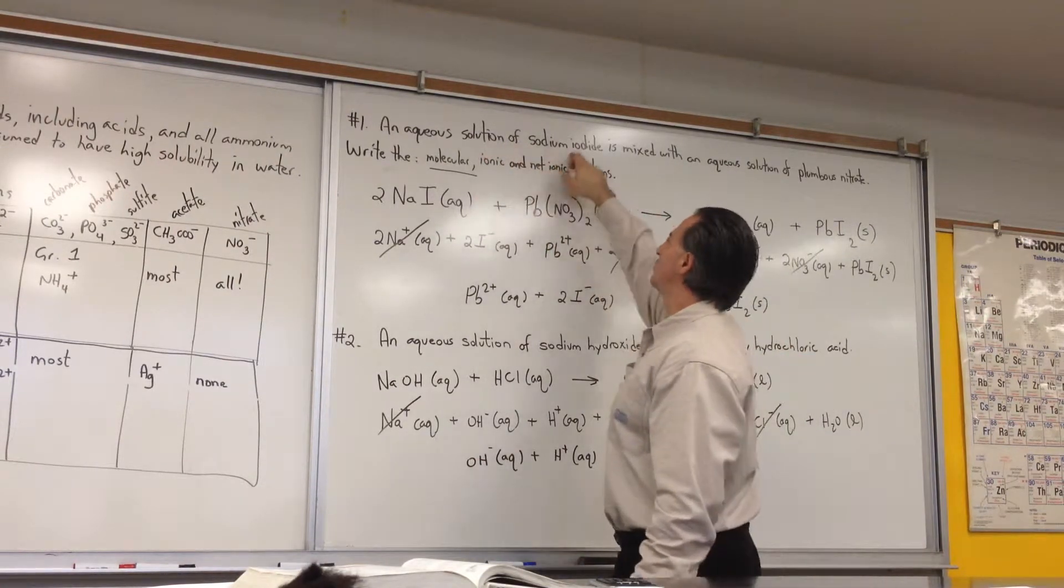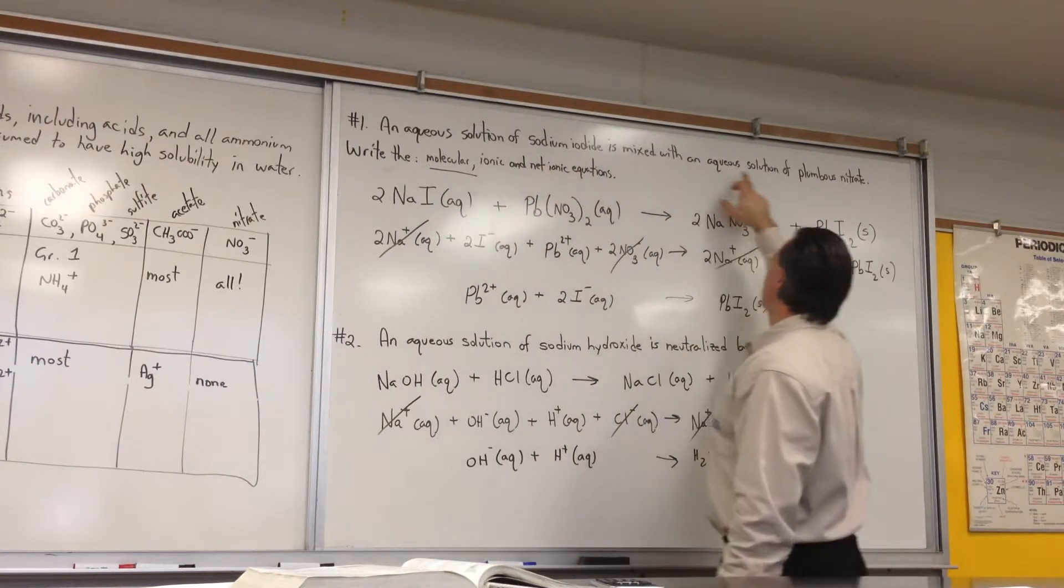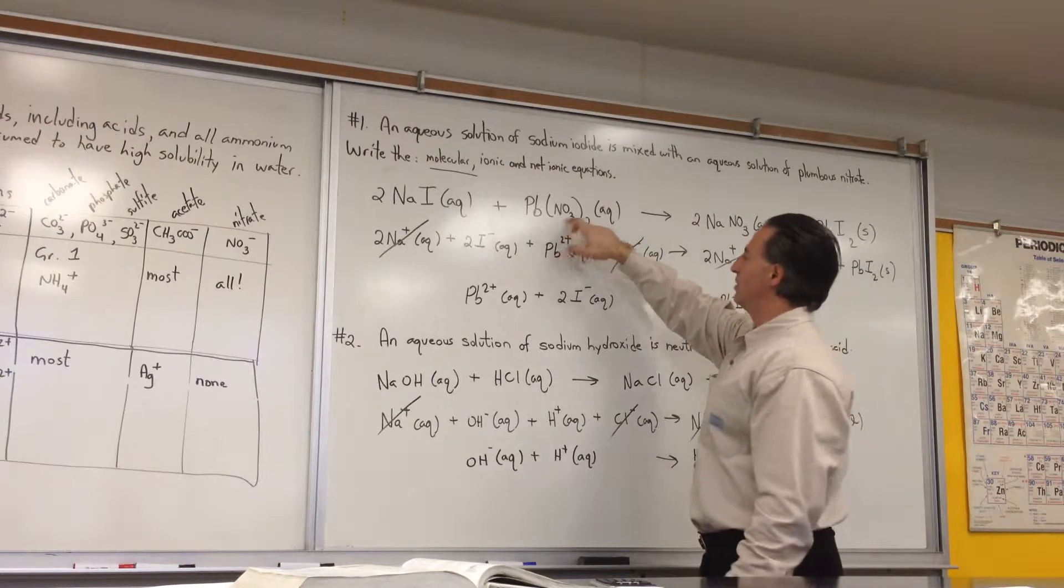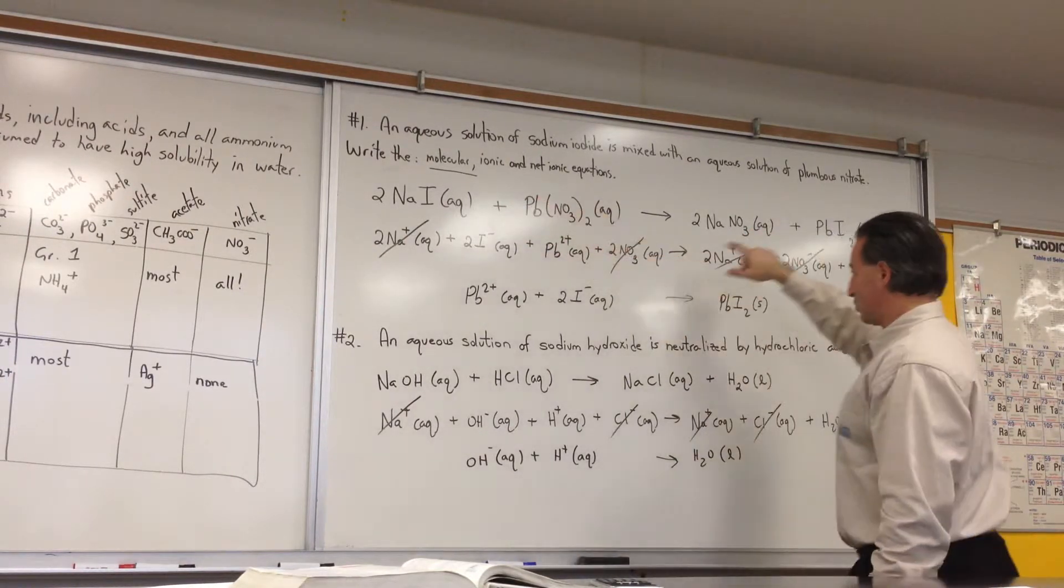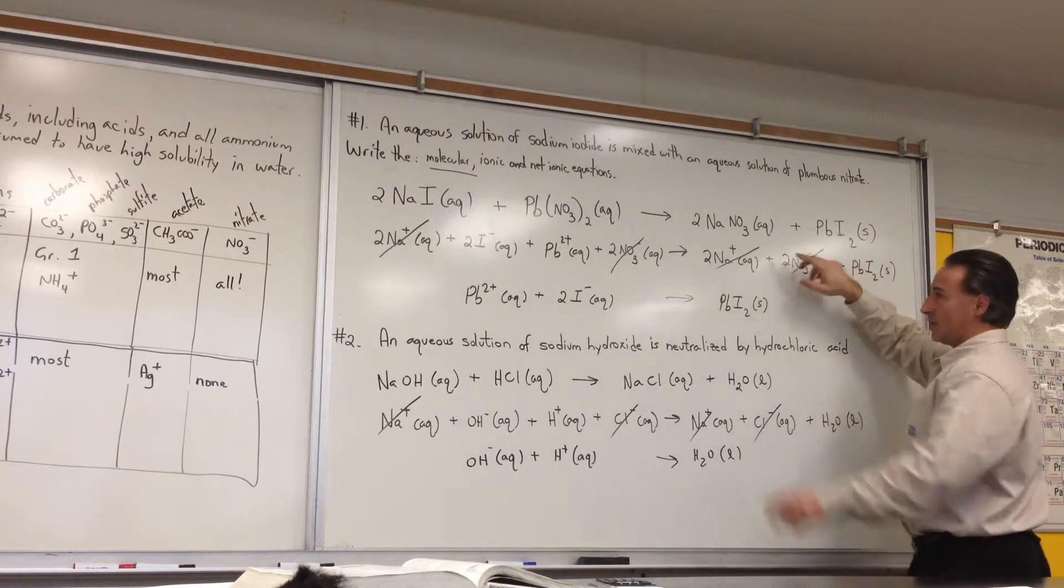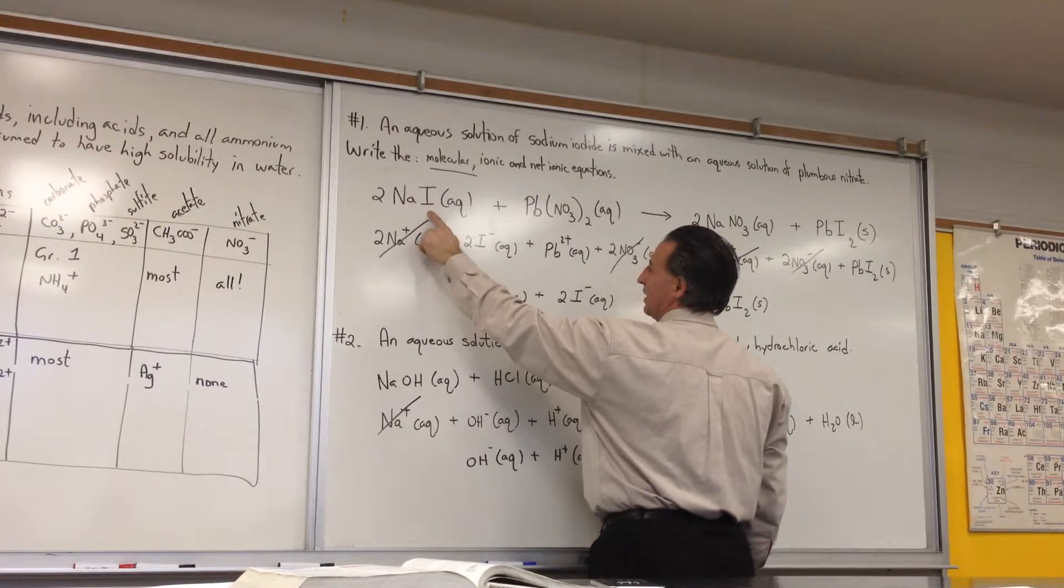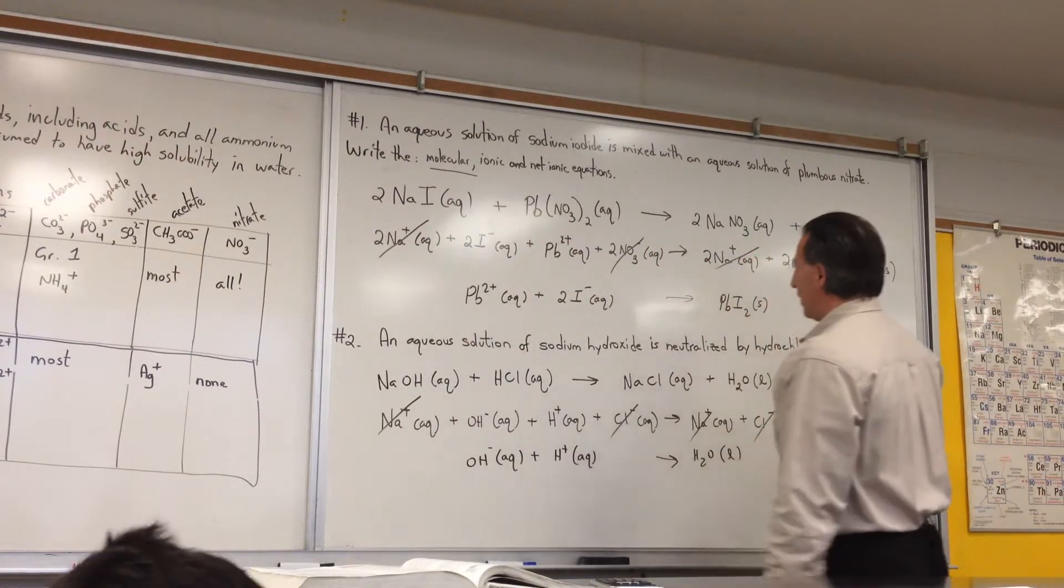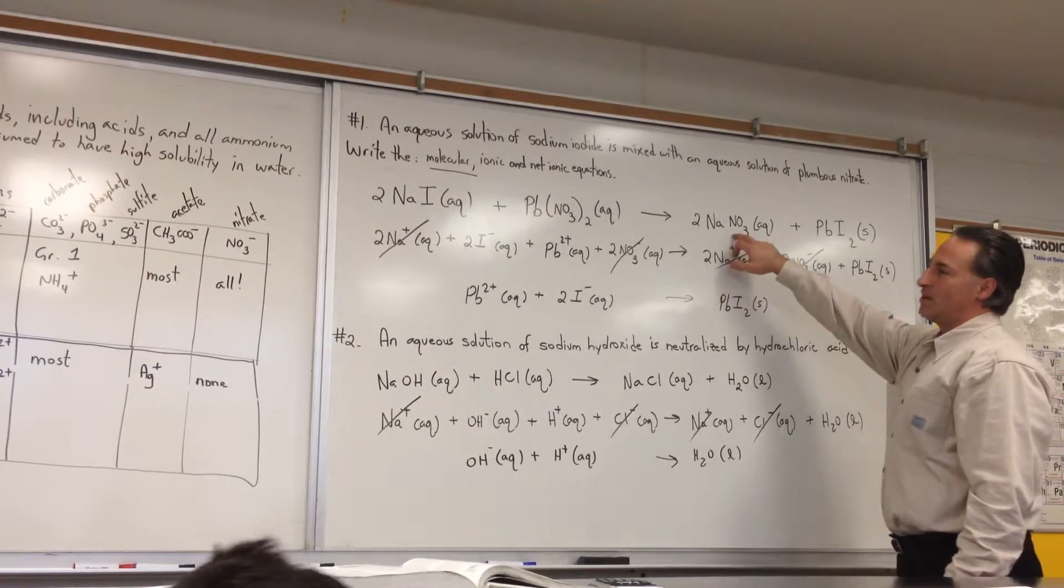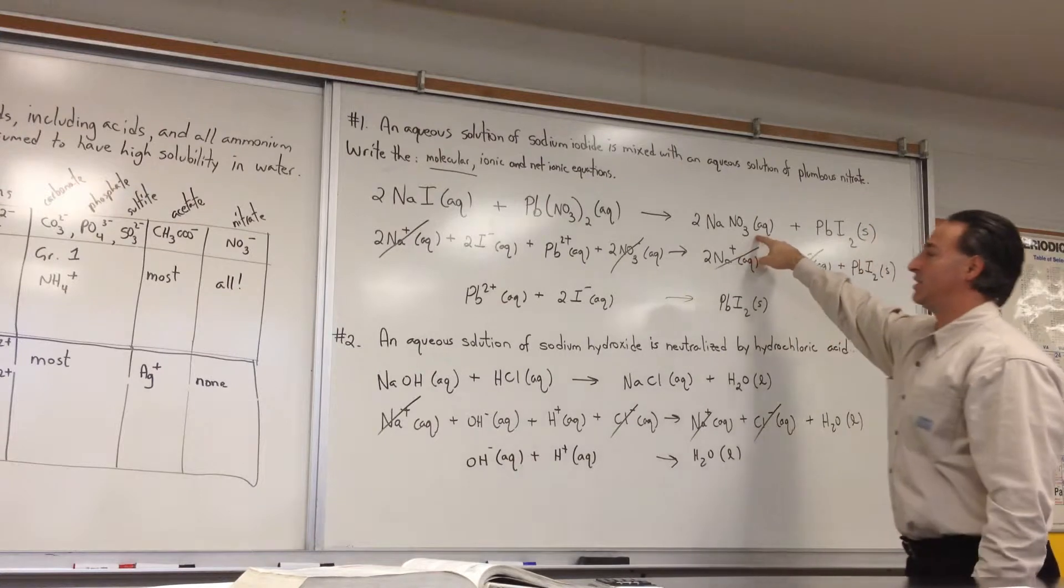An aqueous solution of sodium iodide - here's sodium iodide, aqueous. It's mixed with an aqueous solution of lead nitrate. Here's lead nitrate, aqueous. This is a double displacement reaction. So when these two things mix, the metal from this one goes with the iodide, and the metal from this compound goes with the nitrate. Of course, sodium nitrate is soluble, since all nitrates are soluble. So it's going to stay aqueous. It's not going to form a precipitate.